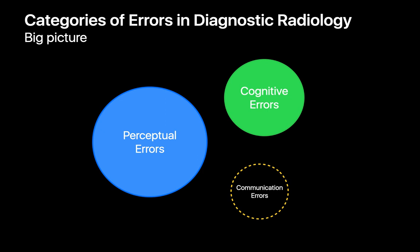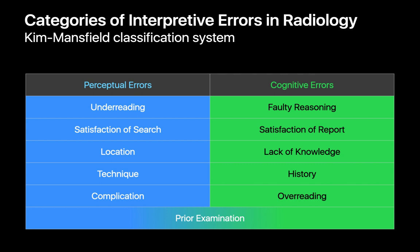Communication errors are considered non-interpretive errors and will be covered in a different presentation. This talk focuses on interpretive errors — those of perception and those of cognition. There are 11 kinds of interpretive errors in radiology: five kinds that are perceptual errors, five kinds that are cognitive errors, and one that's both perceptual and cognitive. We'll review each of these errors and discuss biases that make some more likely to occur.